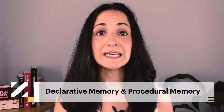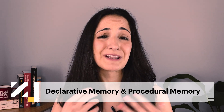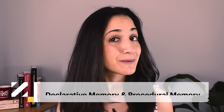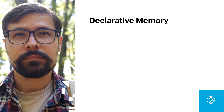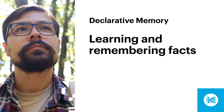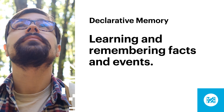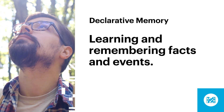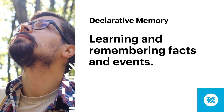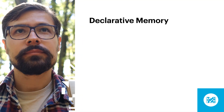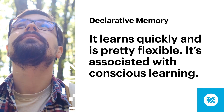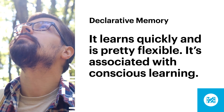Two of the most important long-term memory systems in our brains are declarative and procedural memory. These help us learn and remember lots of different things, including language, but do so in different ways. Declarative memory is used for learning and remembering facts and events — like polydactyl cats have six toes, or I studied Japanese with Mango Languages this morning. When we say that someone has a good memory, we're usually talking about declarative memory. Declarative memory learns quickly and is pretty flexible, and it's usually associated with explicit or conscious learning.